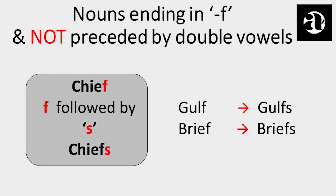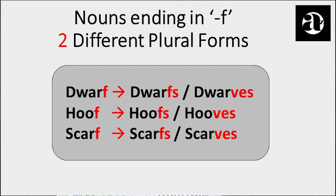Though there may not be a double vowel preceding F, we still add an S to form the plural noun. Some examples are: chief becomes chiefs, gulf becomes gulfs, brief becomes briefs. In some cases, the plural form of nouns ending in F could be represented in two forms — either by adding an S next to F, or replacing F with VES. Dwarf has two plural forms: dwarfs or dwarves. Hoof becomes hoofs or hooves. Scarf becomes scarfs or scarves.